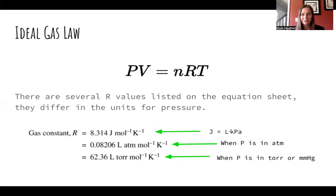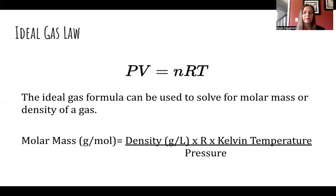As long as you know the ideal gas law — which is on your equations and constants sheet — you can get to any of the others. We can use this to solve for molar mass or for the density of a gas. It's easiest to solve the PV = nRT equation first and then do whatever stoichiometry or other manipulations you might need.